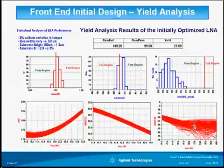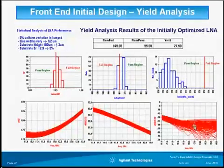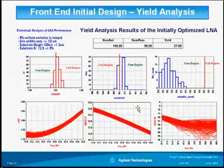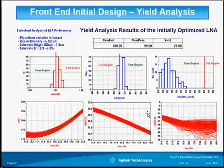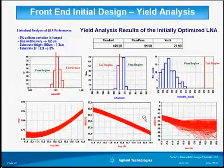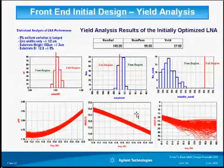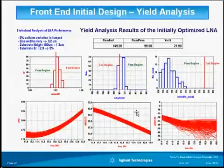The process variation caused the response to shift out from its nominal value, causing failures. Next I will introduce the DFM — Design for Manufacturing — tools in ADS that will transform this design into a robust, high-yield, low-sensitivity design. These tools consist of Design of Experiment (DOE), yield sensitivity histograms, and sensitivity analysis.